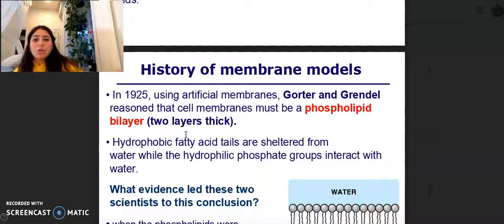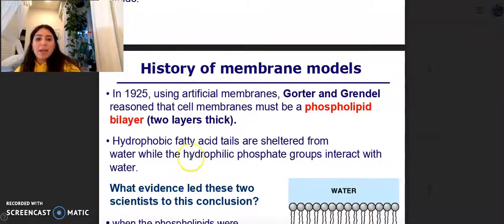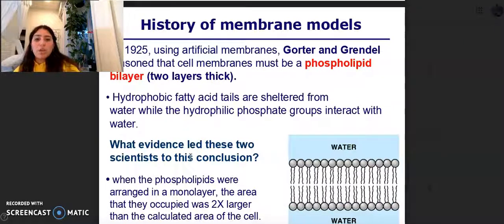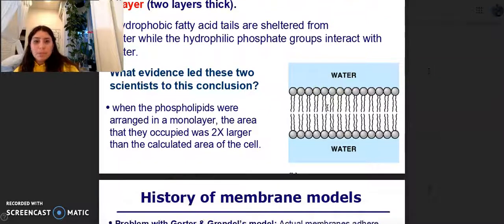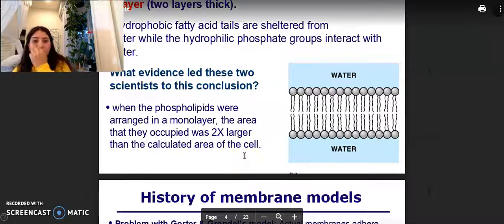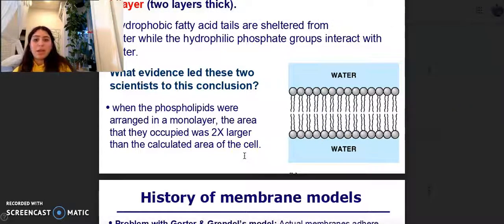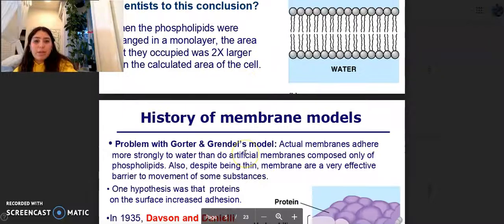In 1952, using artificial membranes, Gorter and Grendel reasoned that cell membranes must be a phospholipid bilayer, two layers thick, and that hydrophobic fatty acid tails are sheltered from water while the hydrophilic phosphate group heads interact with the water. What evidence led the two scientists to this conclusion? When the phospholipids were arranged in a monolayer, the area that they occupied was two times larger than the calculated area of the cell.